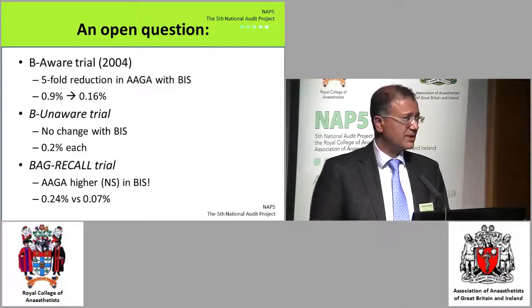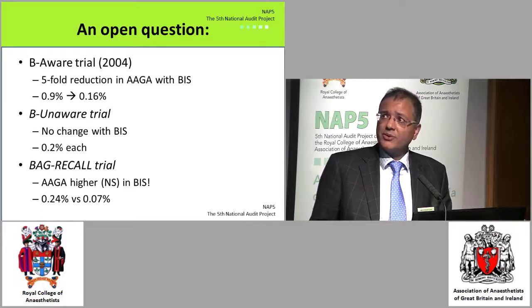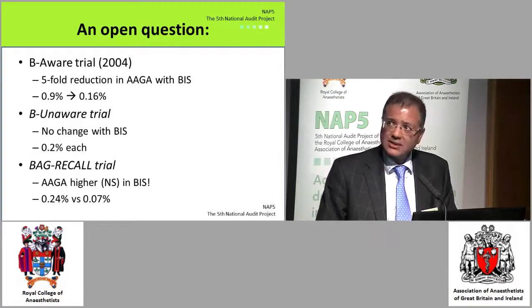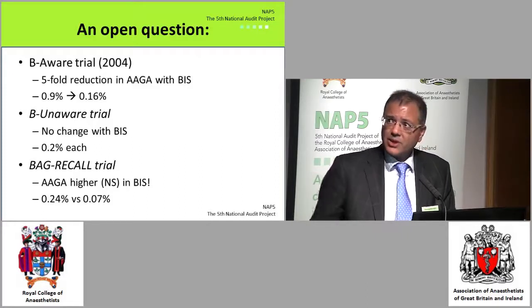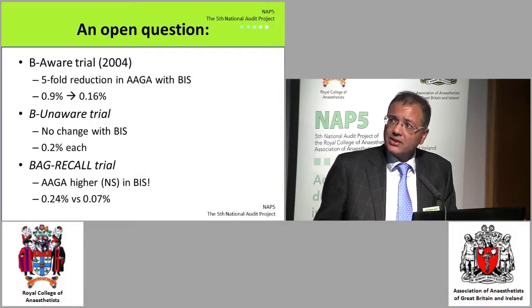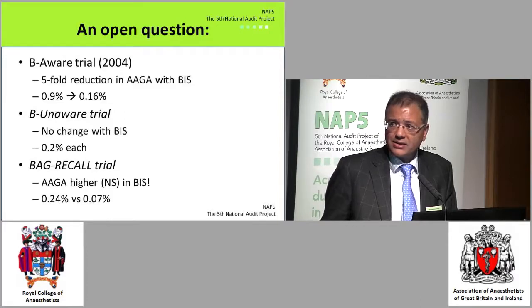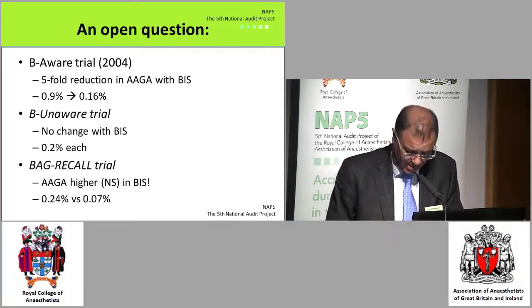The EEG monitoring — like the BIS — is central here. The BE AWARE trial showed a dramatic five-fold reduction in awareness with BIS, highly significant and caused a big stir. But that has not been substantiated in other equally well-powered trials. The B-Aware trial found no change with BIS, and more recently the BAG Recall trial found, if anything, a higher incidence in the BIS group by a considerable margin, though this was non-significant. So it remains very much an open question in the trial world.